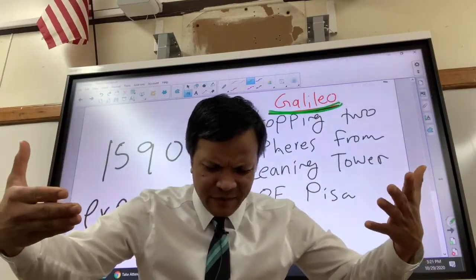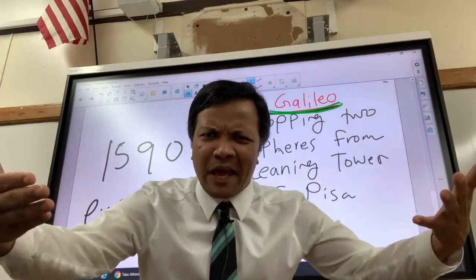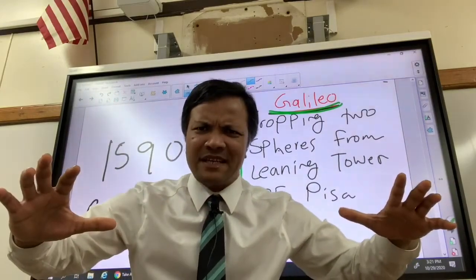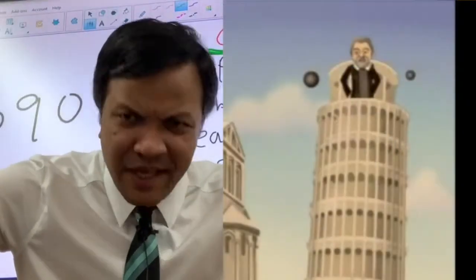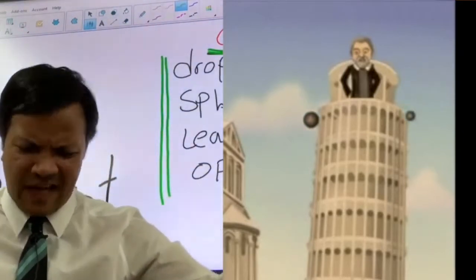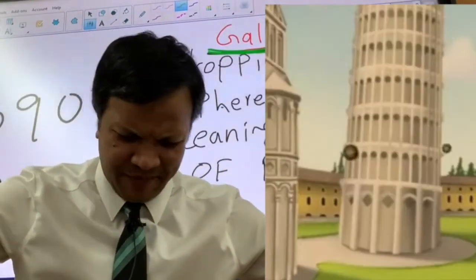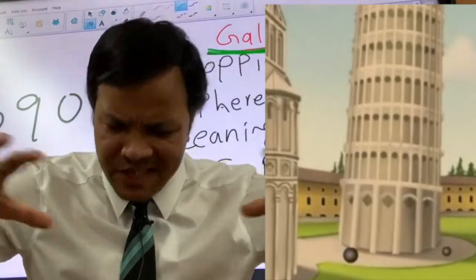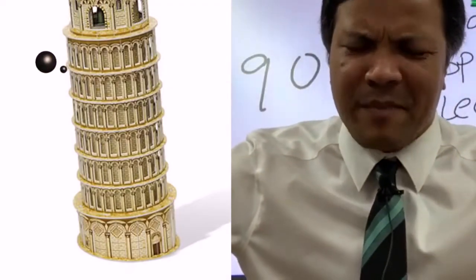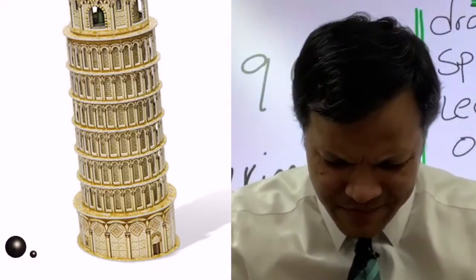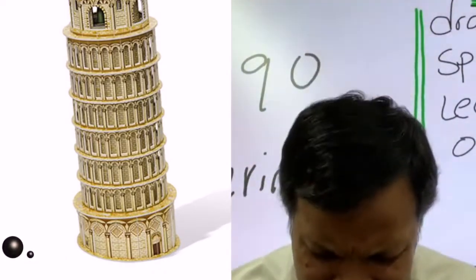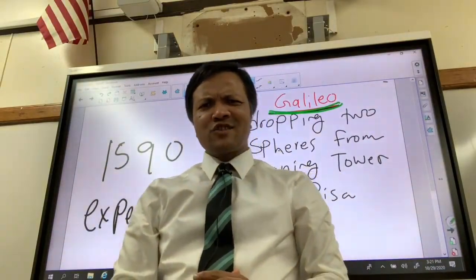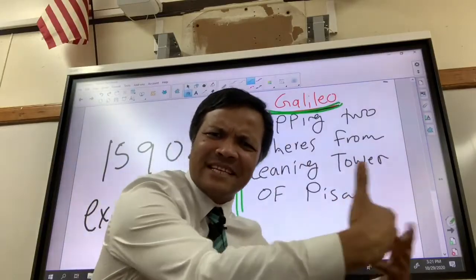One year later, in 1590, 26-year-old Galileo did a famous experiment. He dropped a sphere from the Leaning Tower of Pisa to demonstrate one simple thing: that objects fall at the same rate independent of their mass — that a heavy object and a light object fall at the same rate, touching the ground at the same time. This made Aristotle incorrect, some 1900 years later.